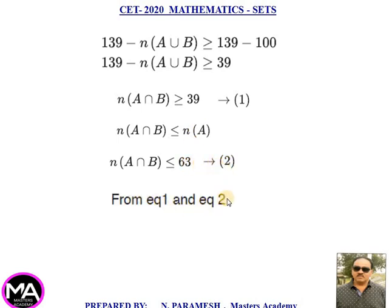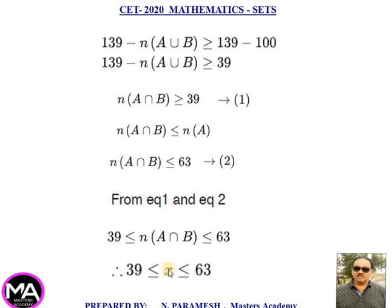From equations 1 and 2: N(A ∩ B) is greater than or equal to 39 and less than or equal to 63. Therefore x is greater than or equal to 39 and less than or equal to 63. That is option third.